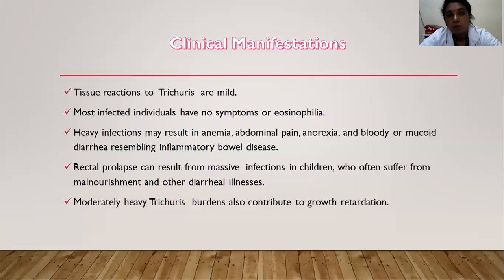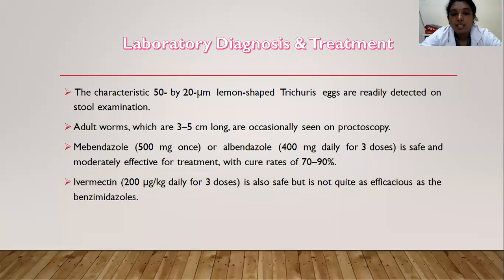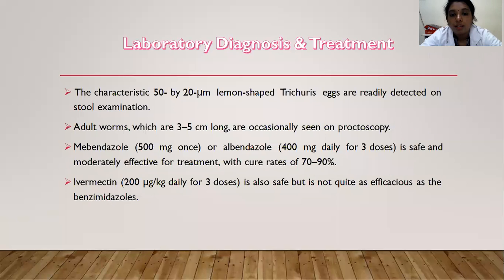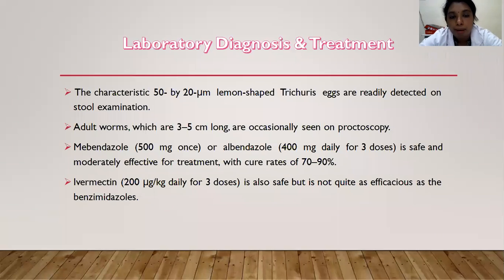Diagnosis and treatment of Trichuriasis: the characteristic 50 by 20 micrometer lemon-shaped Trichuris eggs are readily detected on stool examination. Adult worms, which are 3 to 5 cm long, are seen on proctoscopy in the cecum and rectum. Treatment: mebendazole 500 mg once or albendazole 400 mg daily for 3 doses — safe and effective with cure rates of 70 to 90%. Ivermectin 200 micrograms per kg daily for 3 days is also safe but not as efficacious; mebendazole or albendazole is preferred.